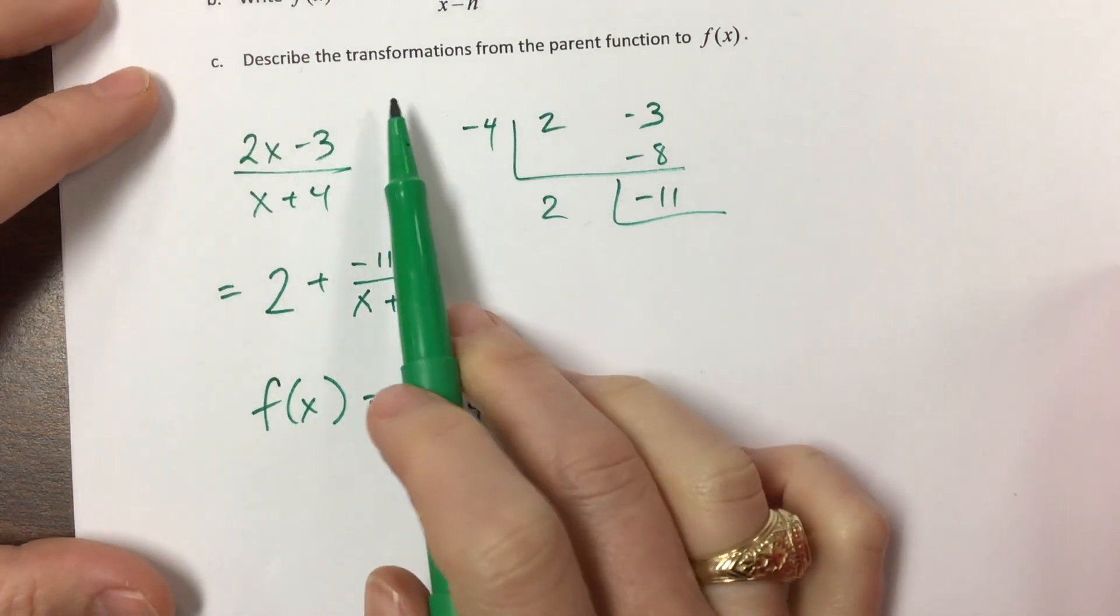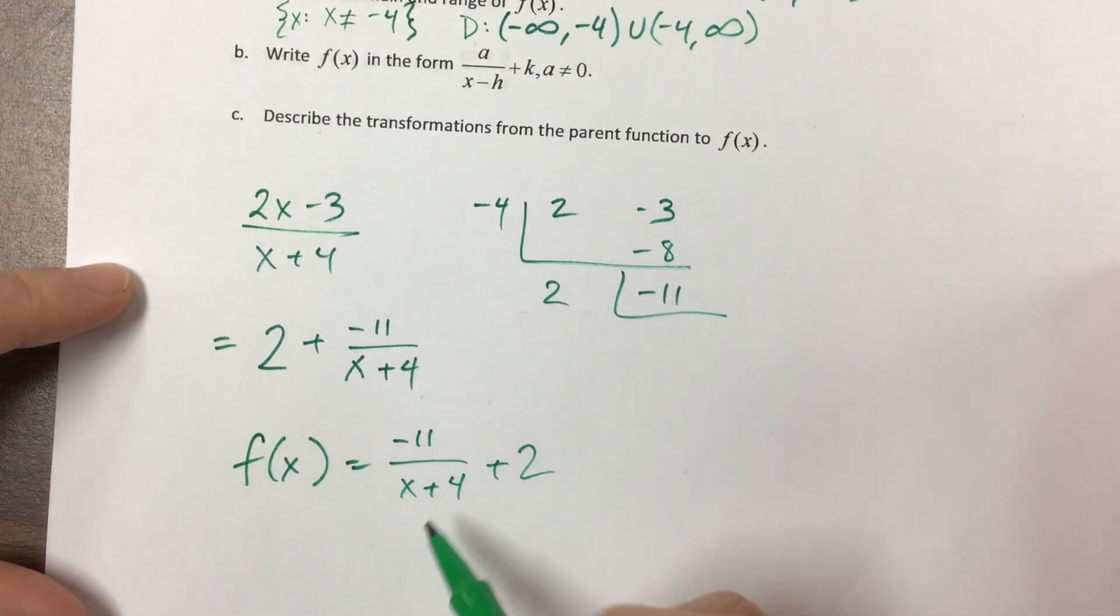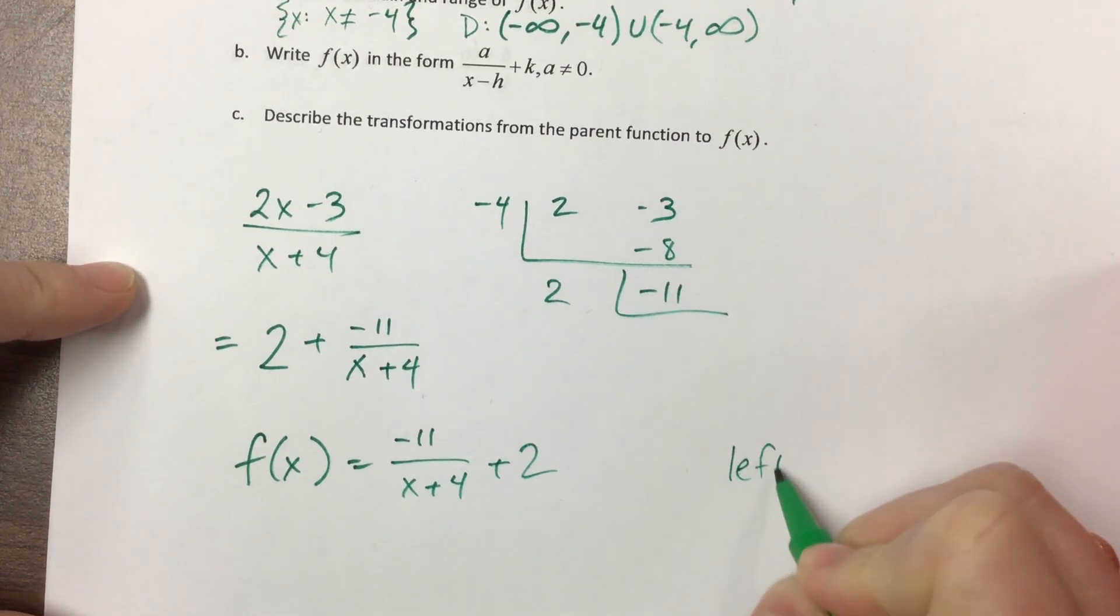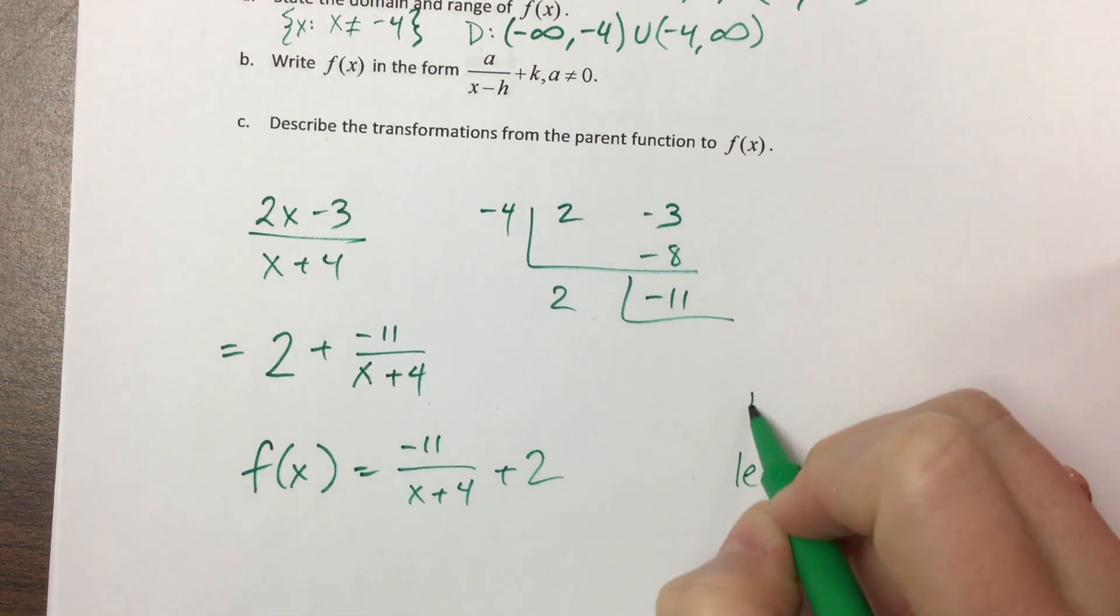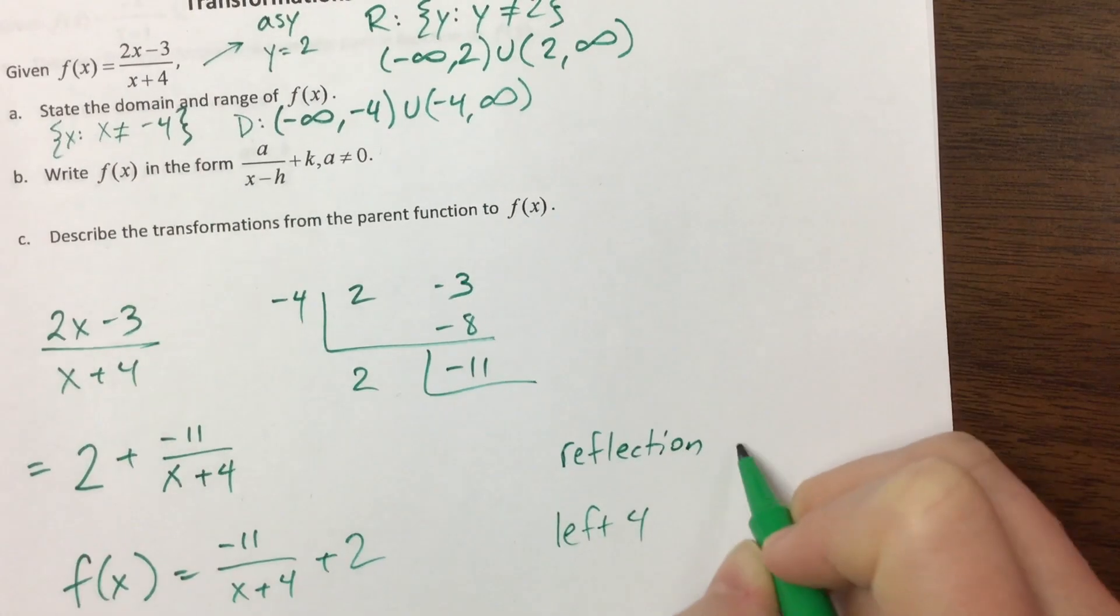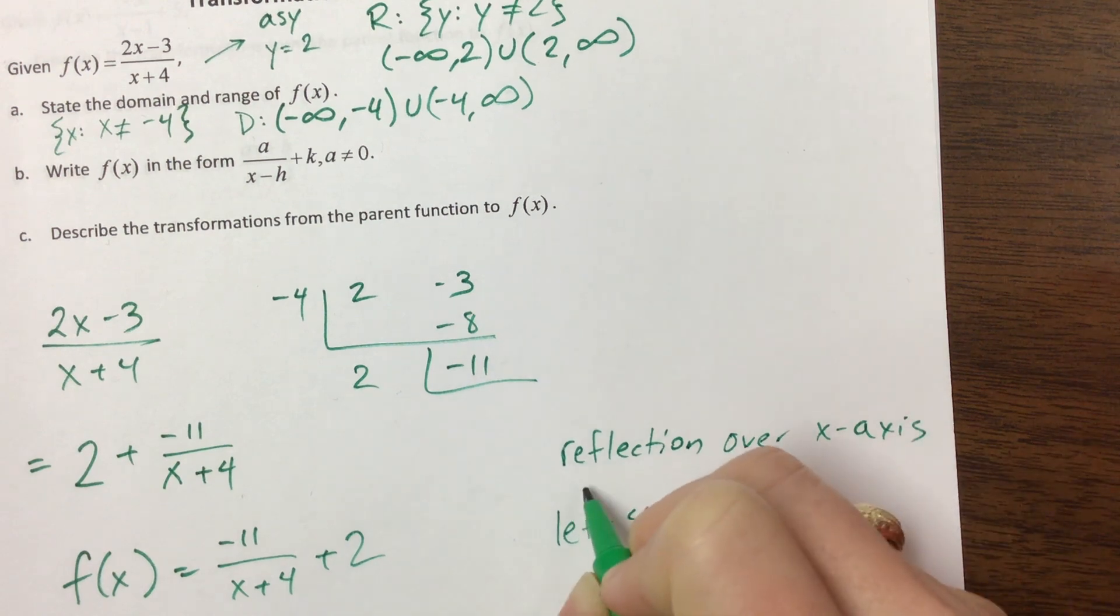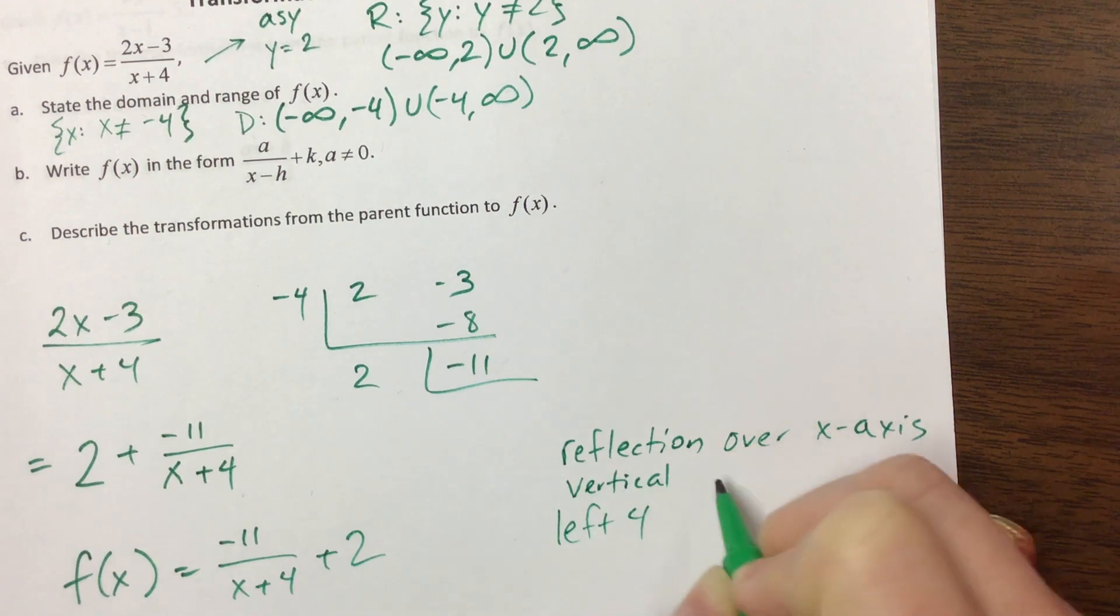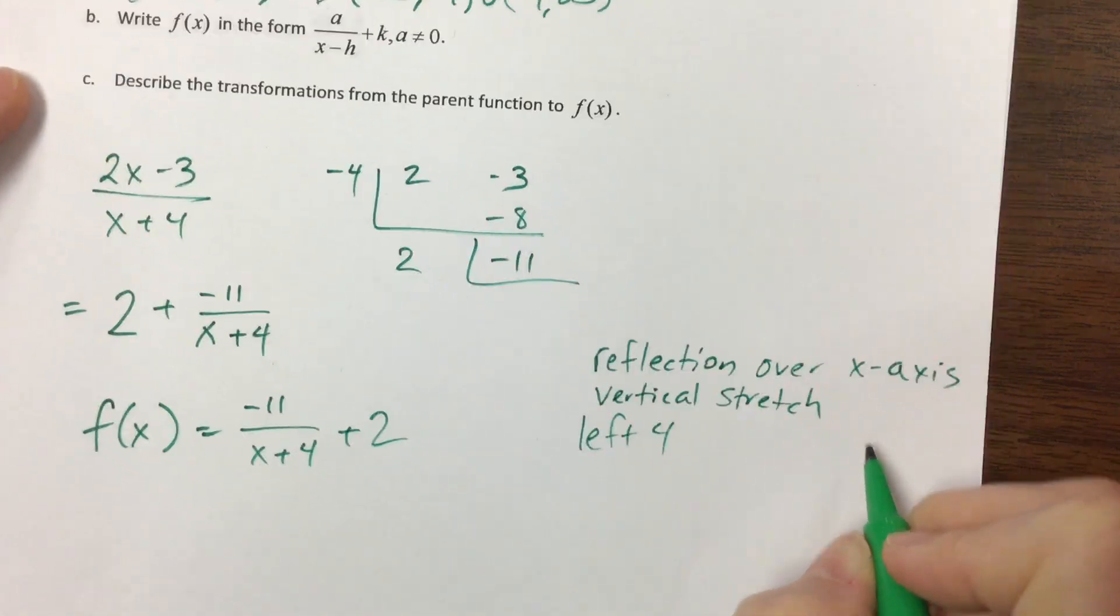And so now, when we want to find the transformations, we know from our transformations that this has moved left 4. Well, okay, so first, we had a reflection over the x-axis. Then we had a vertical stretch of 11.